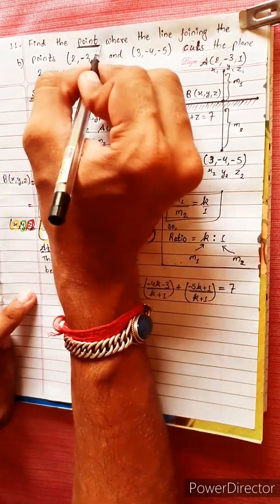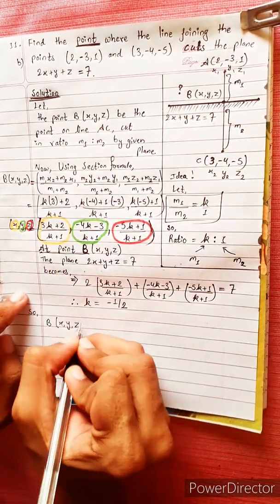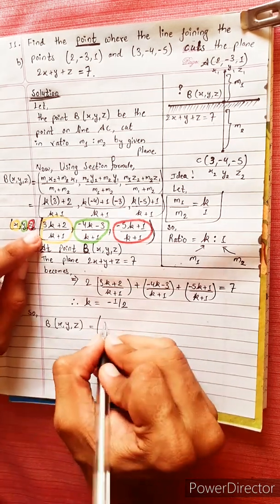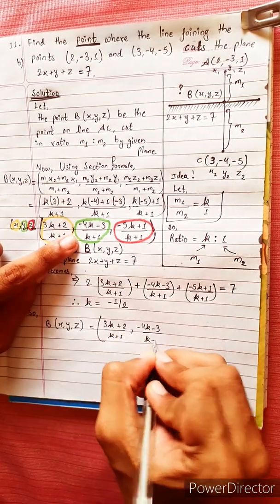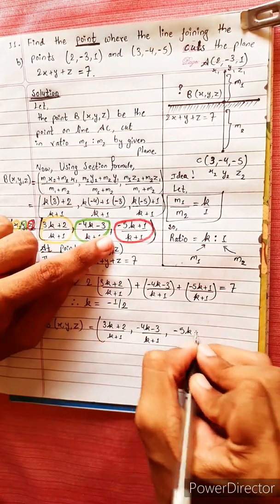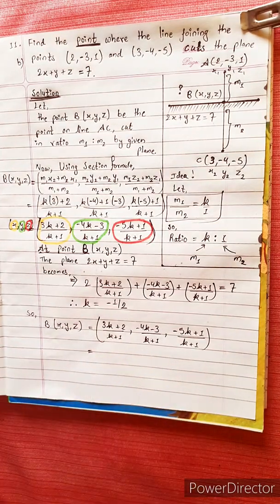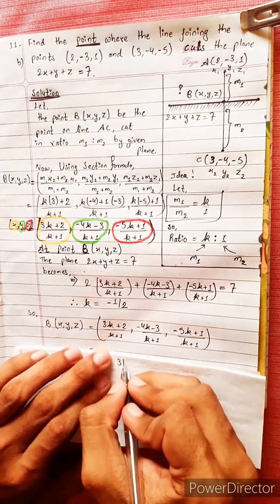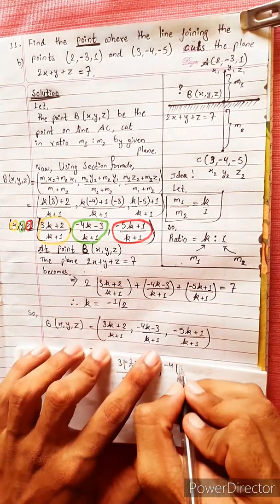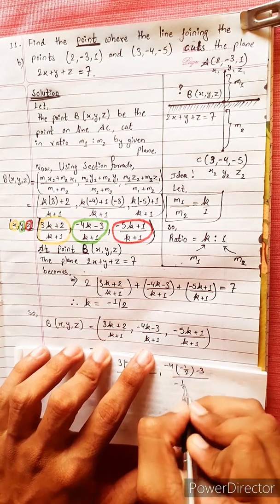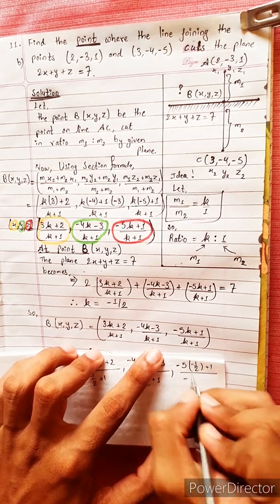This is the final point. Point B (x, y, z). Substituting k equals minus 1 by 2: x equals 3(minus 1/2) plus 2 divided by (minus 1/2 plus 1), y equals minus 4(minus 1/2) minus 3 divided by (minus 1/2 plus 1), z equals minus 5(minus 1/2) plus 1 divided by (minus 1/2 plus 1).